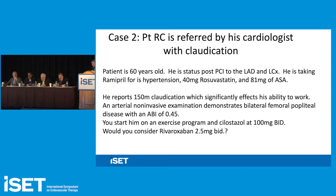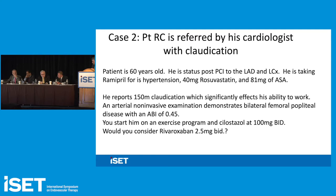Why is the rivaroxaban low dose a BID dosing instead of the usual daily dosing? The half-life of the drug — and also how the trial was designed. When the initial VTE trials were designed, one company chose once-daily dosing at a higher level, and the other chose twice-daily at a lower level. Once you make that decision and start the trial, you can't change it. For the ultra-low-dose PAD group, there was a prior trial with 10 mg per day paired with dual antiplatelet therapy; to reduce bleeding while maintaining benefit, they went to the dual dosing and lower platelet regimen.